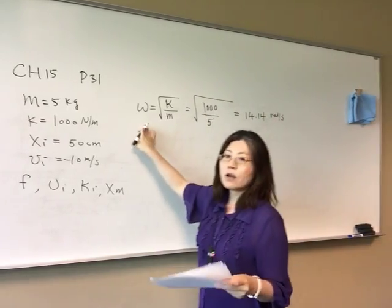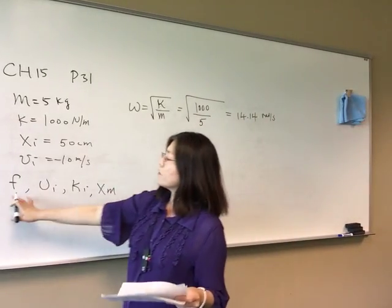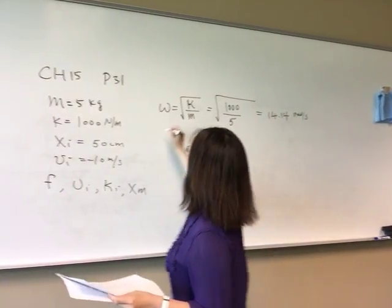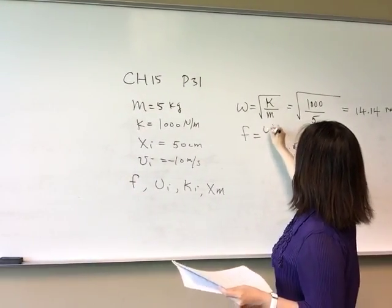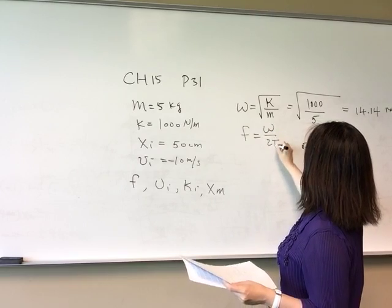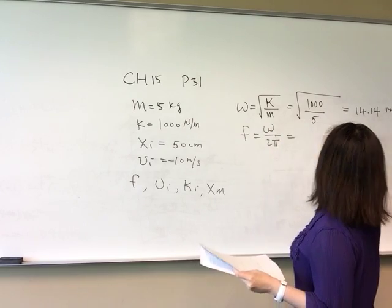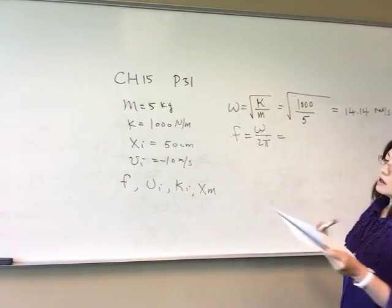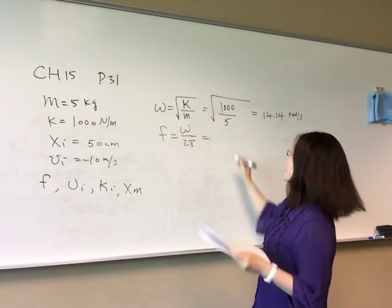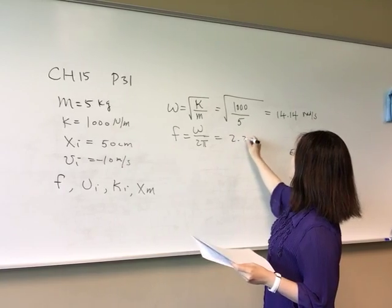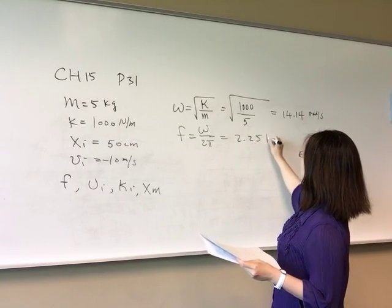We are not asked to find angular frequency — we are asked to find frequency. Frequency equals omega over 2 pi. Plugging in the numbers and dividing by 2 pi, we get 2.25 hertz.